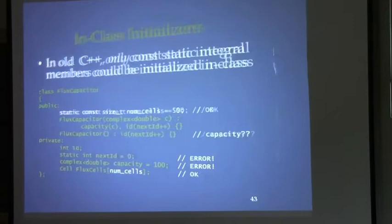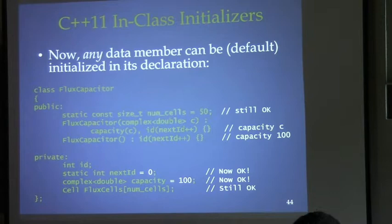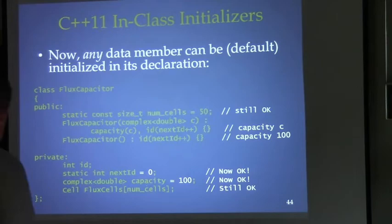But now in C++11, a lot of these things are valid. You can initialize a non-const static, and it doesn't have to be an integral type — it could be double or anything else. You can show an initialization for a plain instance variable. For `capacity`, that value becomes the default if the constructor doesn't do something different. The constructors and compiler are smart enough to avoid doing it twice. And you can still have a static const integral type with an initialization, as before.